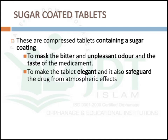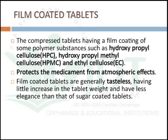Sugar coated tablets are compressible tablets containing a sugar coating, mainly to mask the bitter and unpleasant odor and taste of the medicament, to make the tablet more elegant, and to safeguard the drug from atmospheric effects. Film coated tablets are compressible tablets having a film coating of polymer substances such as hydroxypropylcellulose, hydroxypropylmethylcellulose, or ethylcellulose. The main intention of film coating is to protect the medicament from atmospheric effects. Film coated tablets are generally tasteless but less elegant than sugar coated tablets.